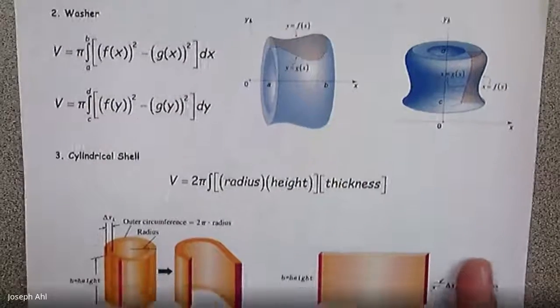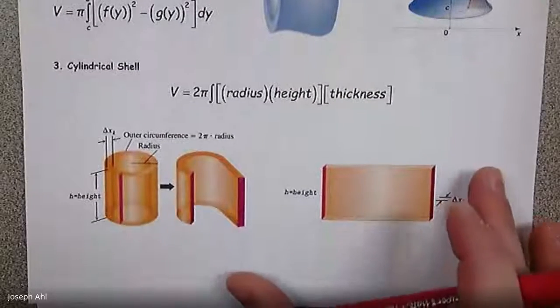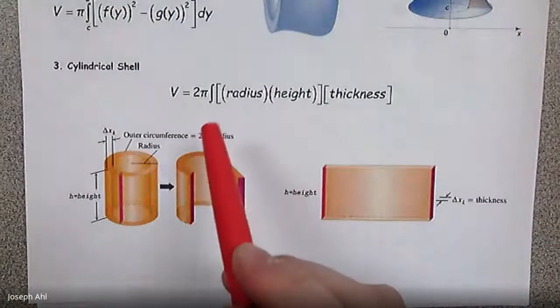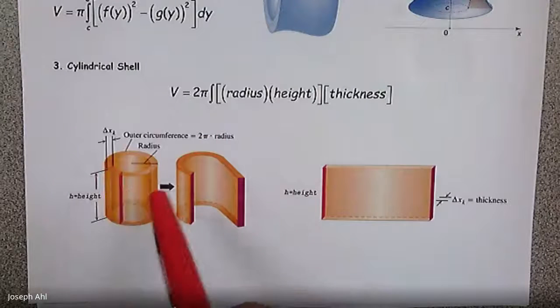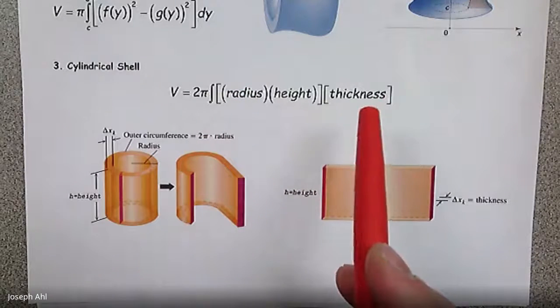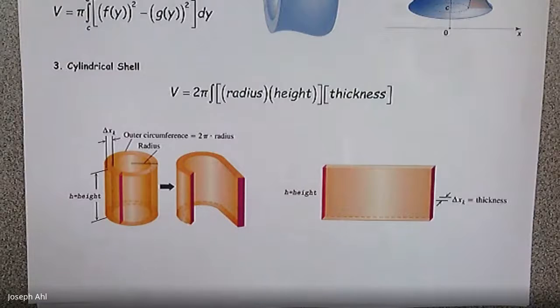And then finally, we have our cylindrical shells that we just learned about in our last lesson, which would be thinking about the surface area around the outside, 2π radius height times the thickness, which is going to become our dx eventually in the integrand.